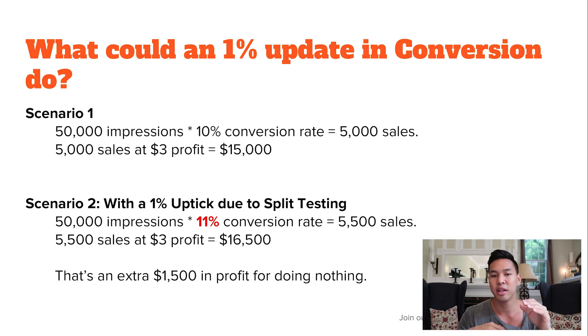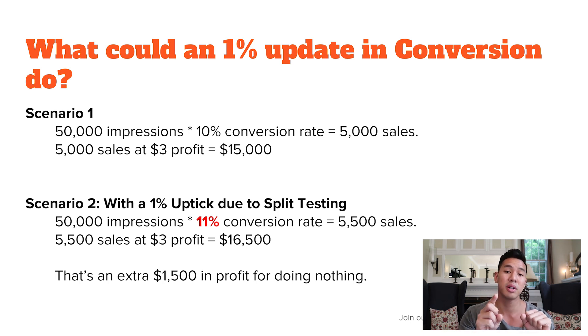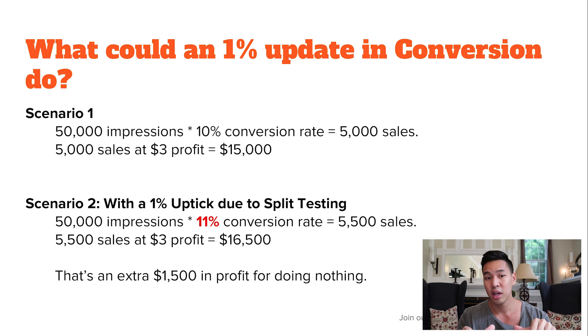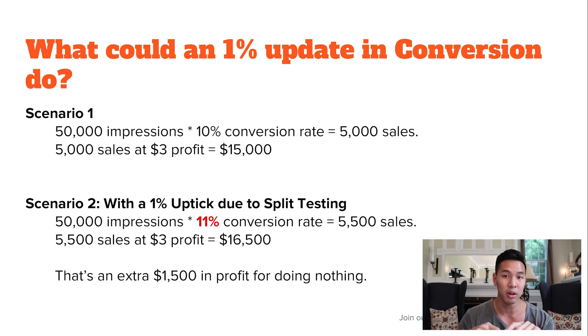However, if you split test and say you update images or do something else, and it increases by just 1% — going from a 10% conversion rate to 11% — that means you're going to be at 5,500 sales. So 5,500 sales times three gives you another $1,500. That's something you kind of set and forget. Who couldn't use an extra $1,500? Imagine if your conversion rate went up 2%, or your impressions went up even more. Think about all the different factors that could increase your profit — but you're not going to know if it works unless you split test.